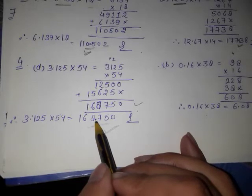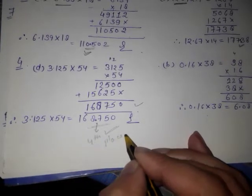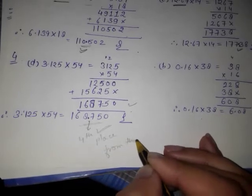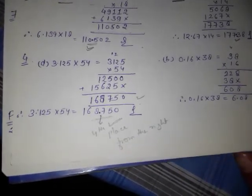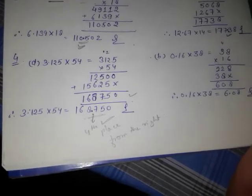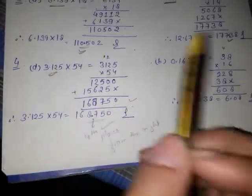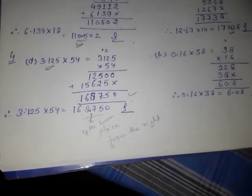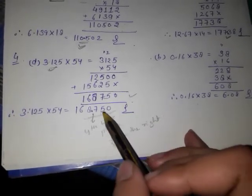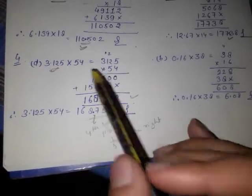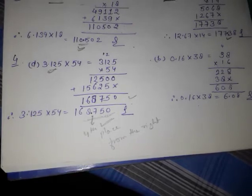तो इस number में भी जो decimal point है वो fourth place पर है from the right। तो सबसे पहले आप दो numbers को simply multiply करेंगे, फिर decimal point को place करेंगे। जो decimal number होगा उसमें आप देखेंगे कि decimal point कौन से place पर है — उसके हिसाब से multiply करने के बाद जो number आएगा, उसमें भी उसी place पर decimal point आएगा from the right।